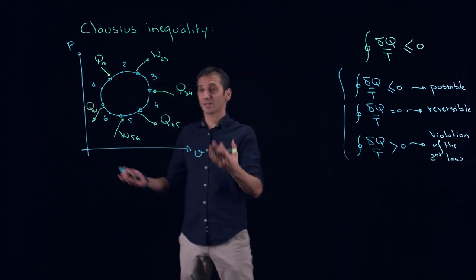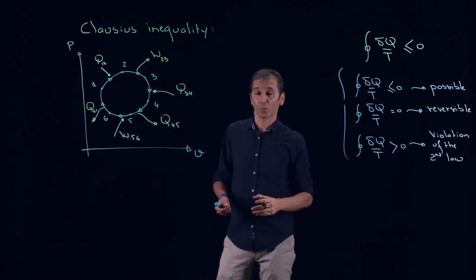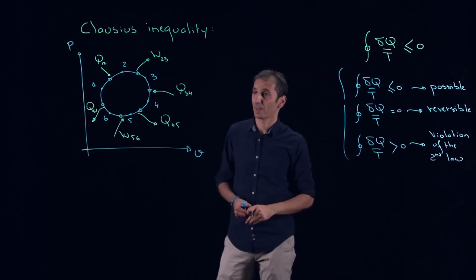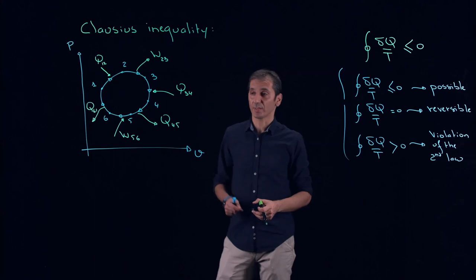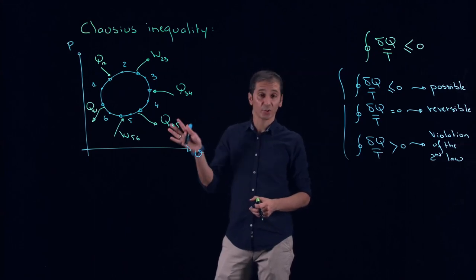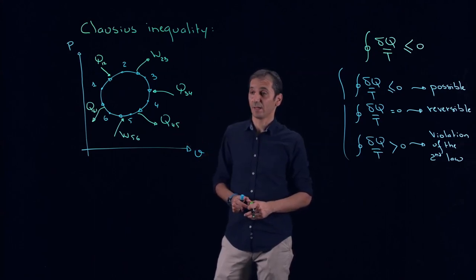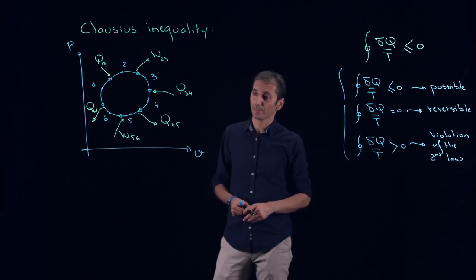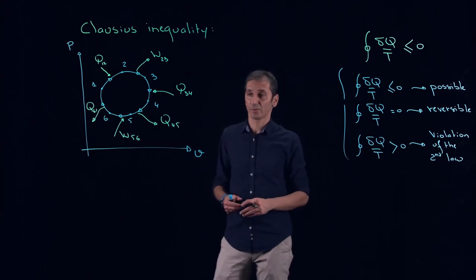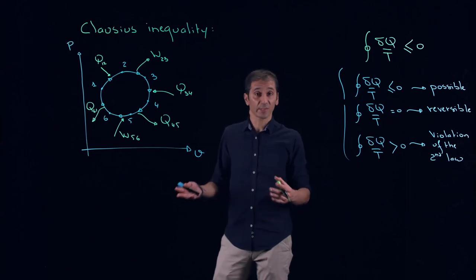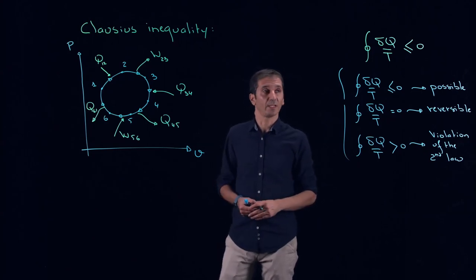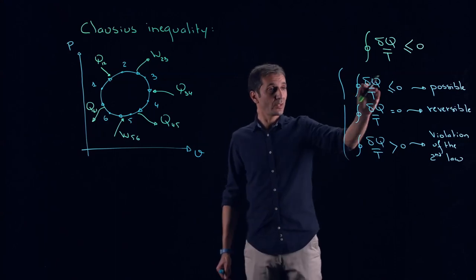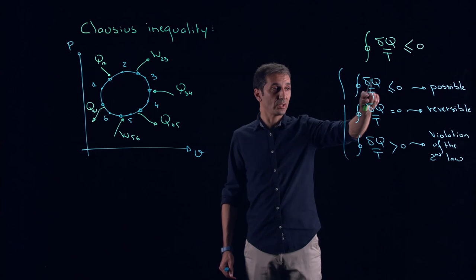So my cat designed this cycle, and my role, actually, is to invest in my cat's company. My cat is claiming that this is possible. It's a revolutionary cycle. And my role, actually, is to say, well, is it possible or not? At least from a fundamental point of view. And interestingly enough, I have a very strong tool now, and this tool is called Clausius inequality.